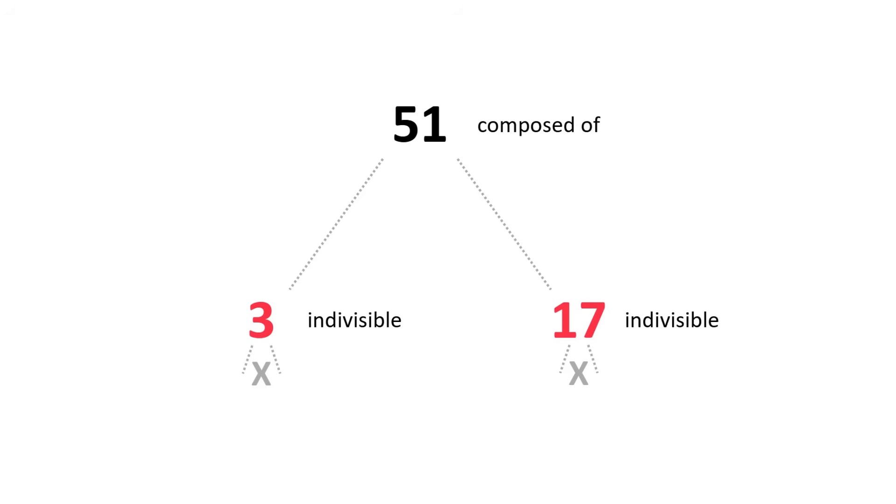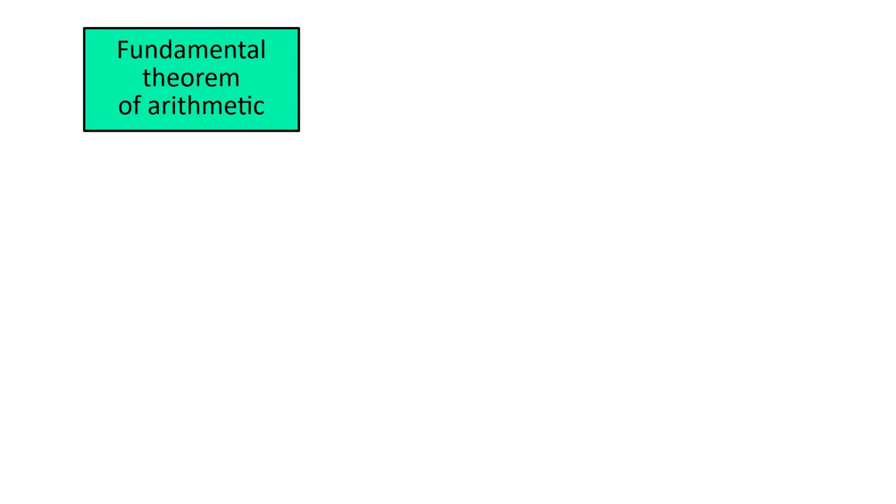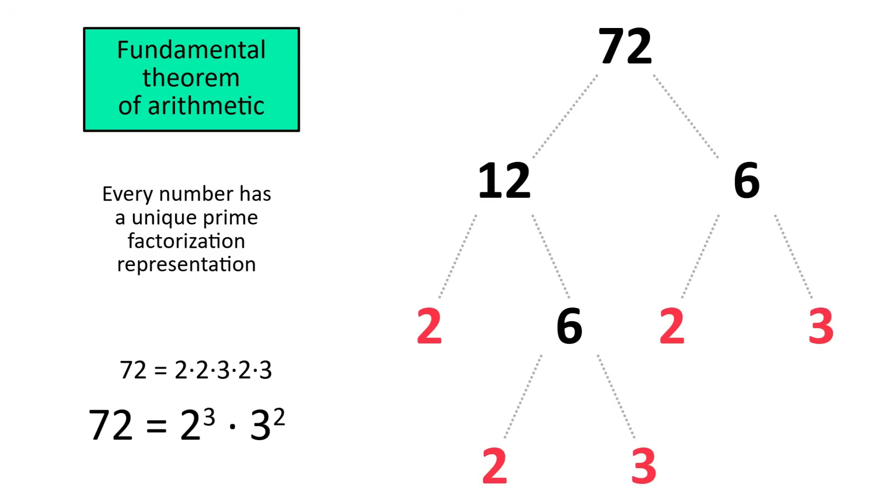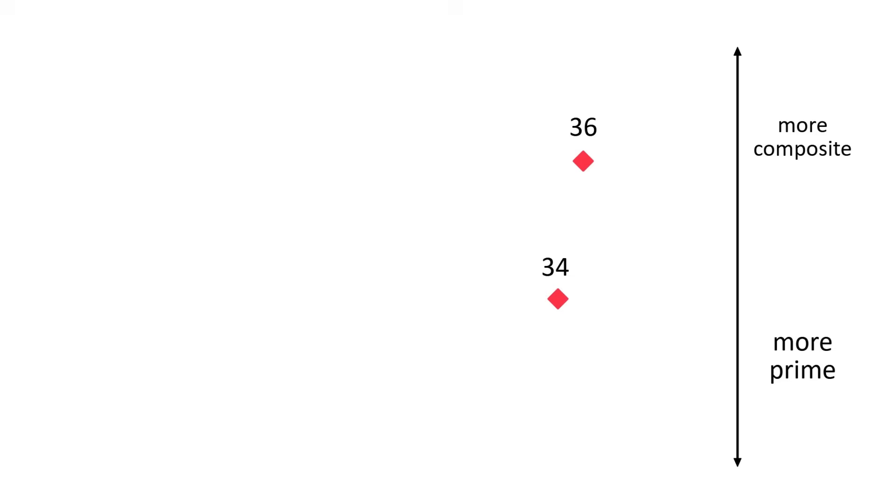But there's a lot of internal variation within these categories. For example, consider 34 and 36. Neither one is prime, but in my opinion, 34 feels a lot more prime than 36. The reason for this has to do with the fundamental theorem of arithmetic. It tells us that each composite number has a unique prime factorization, which can be found by breaking up the components until you get all primes. 36 has more prime factors than 34, which means it can be broken down more times. In this sense, 36 is more composite and 34 is more prime.